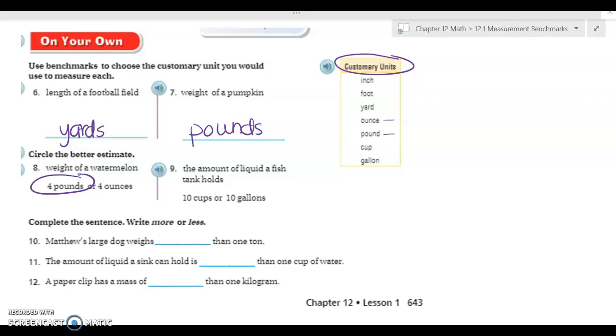Okay, last section, complete the sentence with more or less. Matthew's large dog weighs blank than one ton. It weighs less than one ton because I'm pretty sure his dog weighs less than a car. Number eleven, the amount of liquid a sink can hold is more or less than one cup of water? Well I know my sink holds way more than one cup of water, so it's definitely more. And last but not least, number twelve, a paperclip has a mass of more or less than one kilogram? Definitely less than one kilogram.